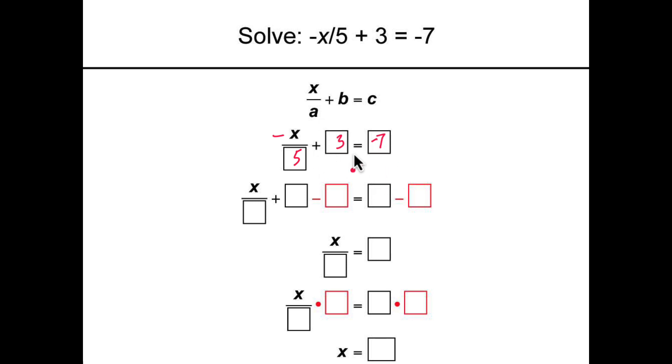We want to get rid of this term so we subtract both sides by 3. We get negative x over 5 plus 3 minus 3 equals negative 7 minus 3. As you can tell, we're subtracting 3 from both sides of the equation.